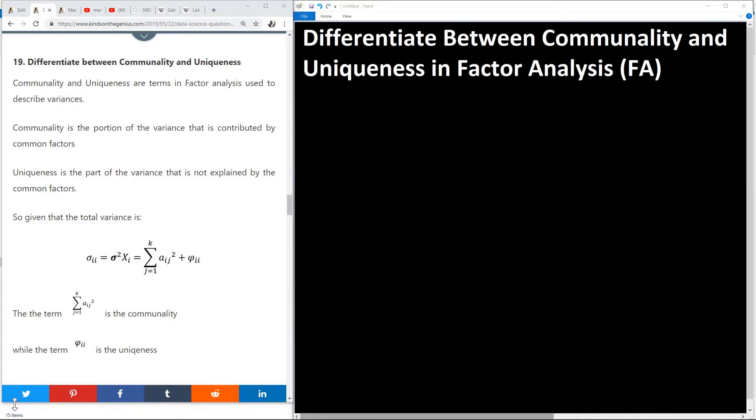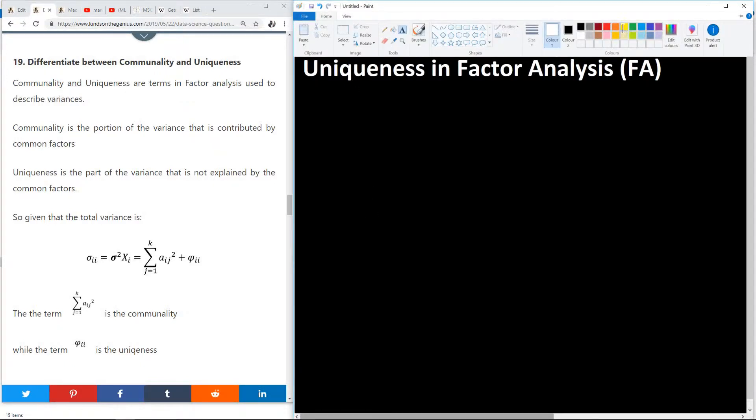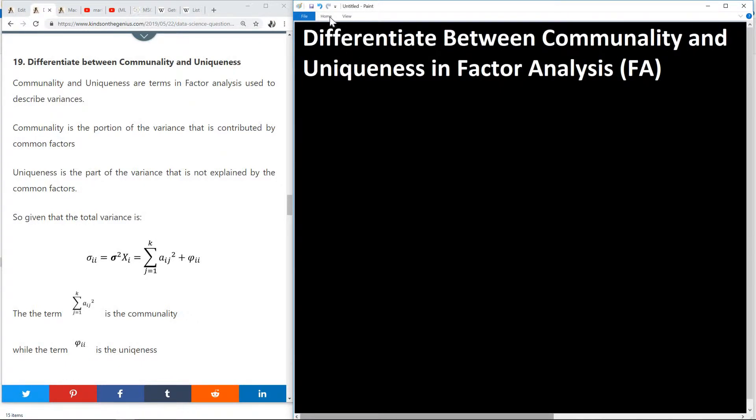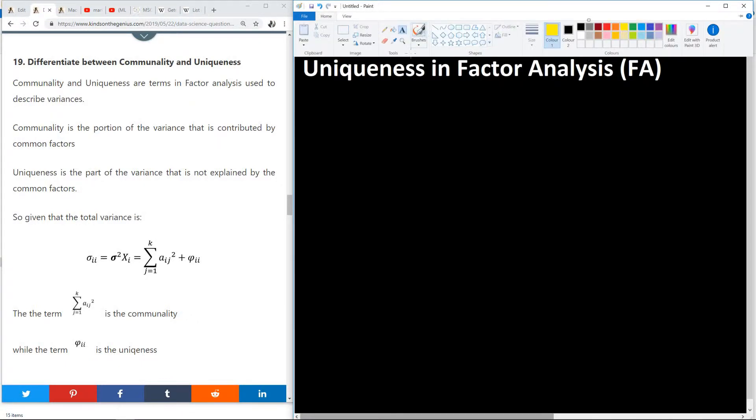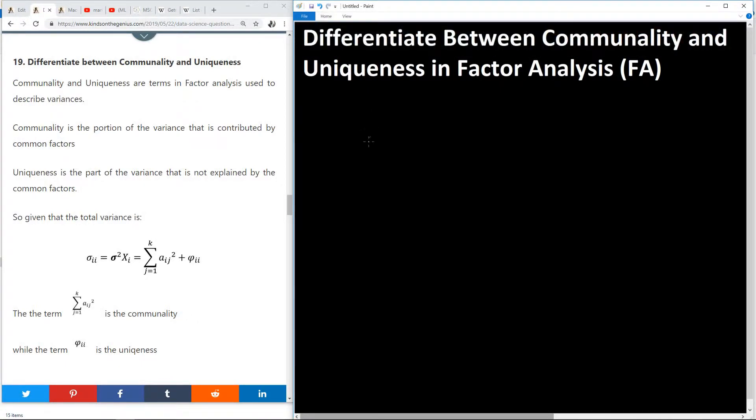Today we are going to ask a question that says differentiate between communality and uniqueness in factor analysis. I actually have tried to avoid writing so much math and calculation, so much derivation in this series, but it seems I can't escape it.